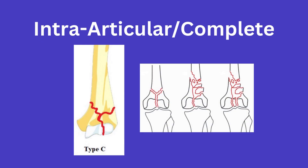Lastly, for an intraarticular fracture, as you might have already guessed, this is a fracture that involves the articular surface but one in which there is no metaphysis-diaphysis continuity. You can see here that this is a type C fracture, as you cannot draw this imaginary line from the articular surface to the diaphysis of the bone.